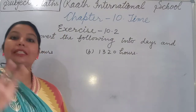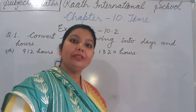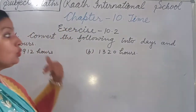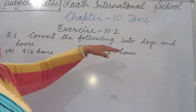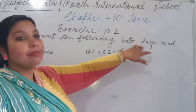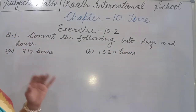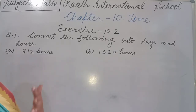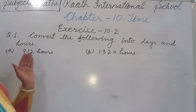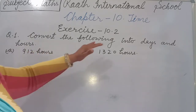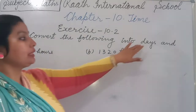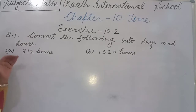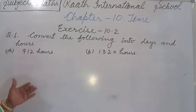In division we get two answers: quotient and remainder. The quotient will be in the converted unit — here it will be in days. The remainder will remain in the original unit — here it stays in hours. We divide by 24 because 24 hours make 1 day.